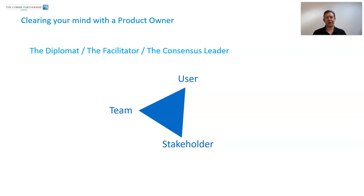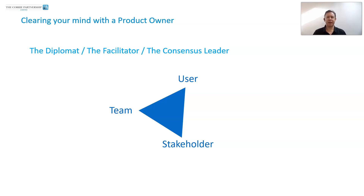One way to deal with conflicts or tensions — for example between the user and the stakeholder — is to facilitate the conversation directly between those two groups. Rather than going backwards and forwards representing each side, put the people in the room and orchestrate the conversation. Sometimes stakeholders want one thing, the team says they can't do it, and the user demands something else. Bring them together, build a consensus — and you only need consensus for the next sprint, then review what you've created and continue.